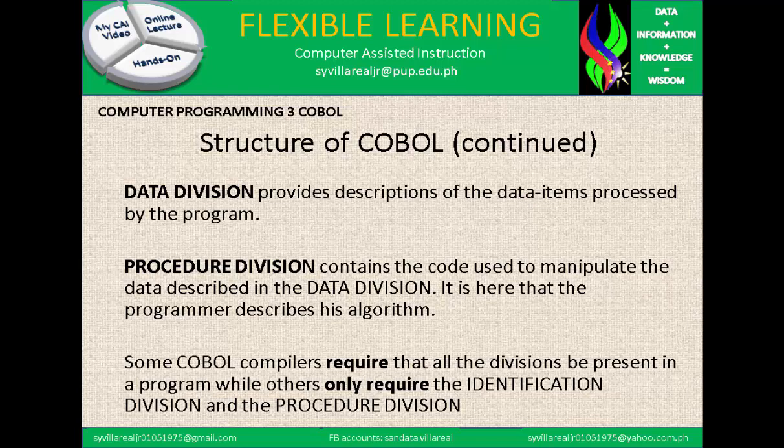Some COBOL compilers require that all four divisions be present in the program, while others only require the identification division and the procedure division. But for a complete program, all four divisions are needed. If you want to create a simpler program, not all four divisions are required — for example, if you are just displaying a name, a very simple display code is sufficient, with no need to put all four divisions.